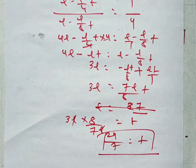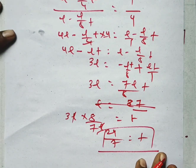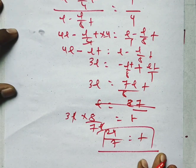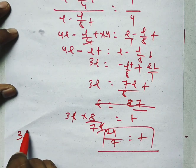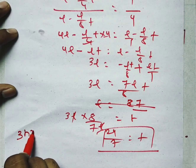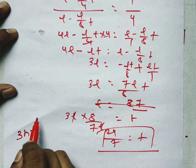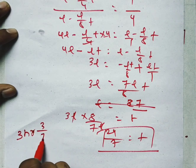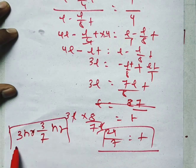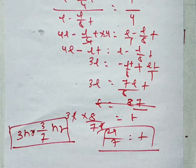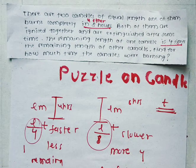So T equals 24/7 hours. This is the time for which both candles were burning. In mixed number form, that is 3 and 3/7 hours. So for 3 hours and 3/7 of an hour, both candles were burning.